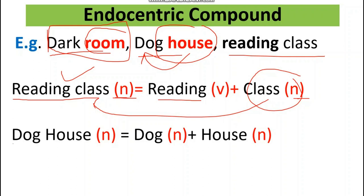Let's look at 'dog house' again. Dog house is a noun. 'Dog' is a noun and 'house' is a noun. The word 'house' is the head word, and dog house means we are talking about a house for a dog. So dog house is an endocentric compound because the head is inside the compound and it carries the basic meaning of the whole compound.